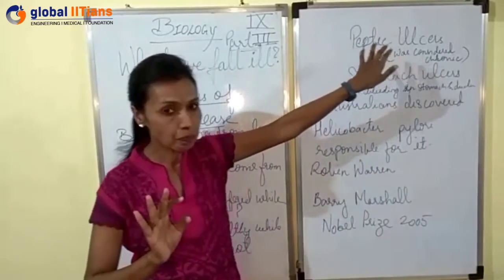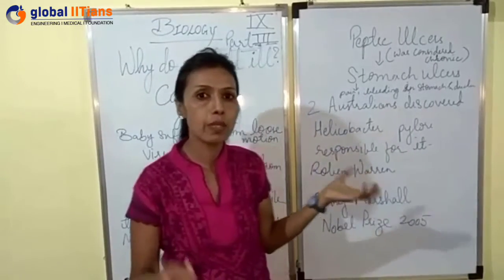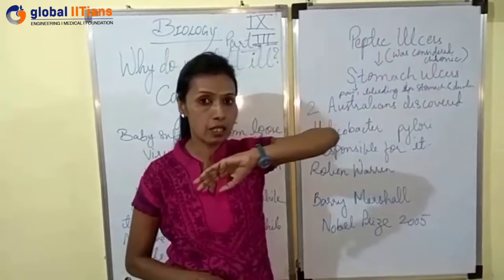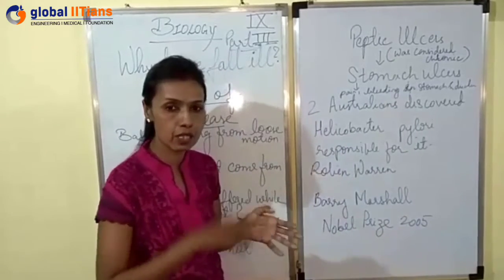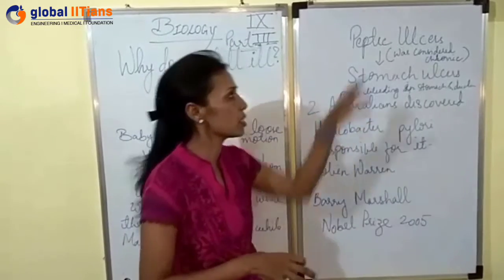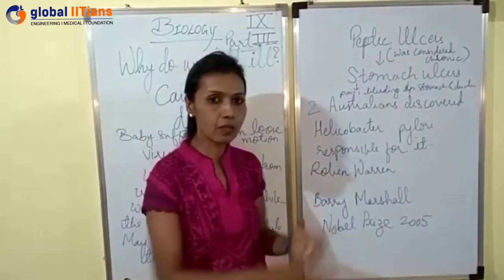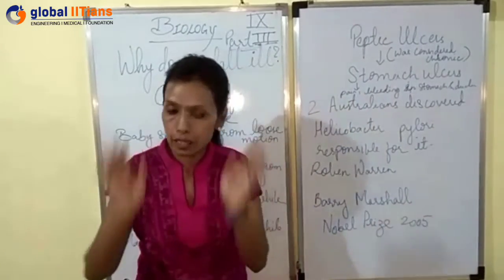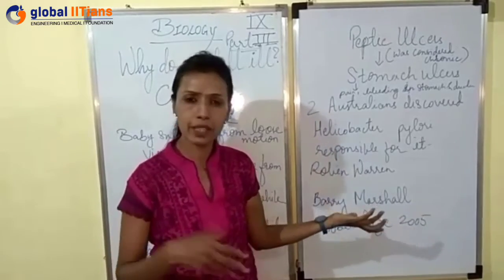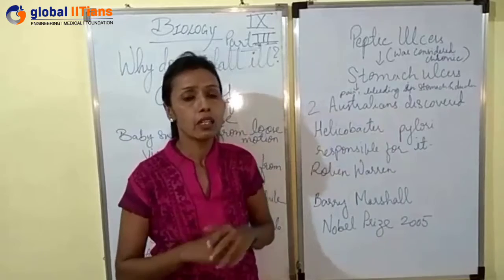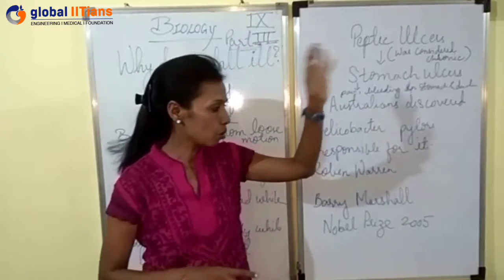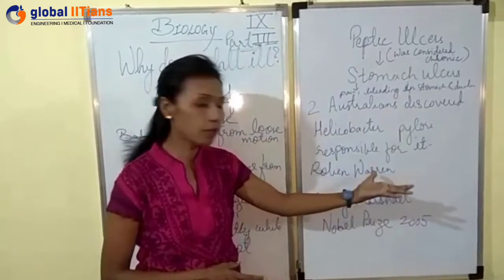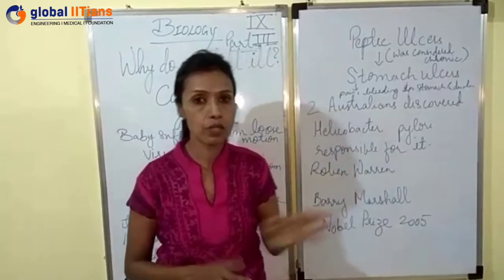That means peptic ulcers can be cured, because they are caused by bacteria. By the use of appropriate antibiotics, peptic ulcers can be cured. No more is peptic ulcer considered a chronic disease — there is a treatment for it, and antibiotics work very efficiently against this kind of infection. People get cured; it is not like one has to suffer from stomach ulcers throughout the lifetime. Because of their discovery of the causative organism for peptic ulcers, these two people from Australia were awarded the Nobel Prize in the year 2005.